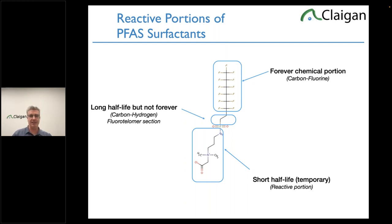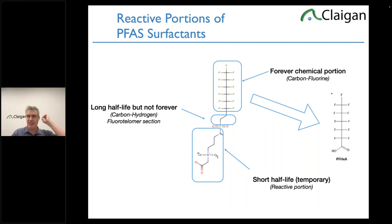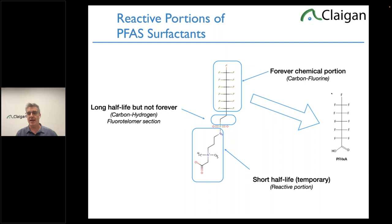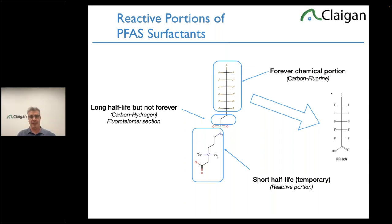6:2-FTS is not technically a forever chemical because the polyethylene middle piece will eventually degrade — it oxidizes and pops off, taking the sulfur with it. That's one reason we don't see PFHxS — the sulfur is on the other side of those carbon-hydrogens and leaves when they leave. When the non-forever chemicals leave, you're left with just carbon and fluorine; combined with oxygen and hydrogen from water, you get the PFOA family — specifically PFHxA, the six-carbon version.